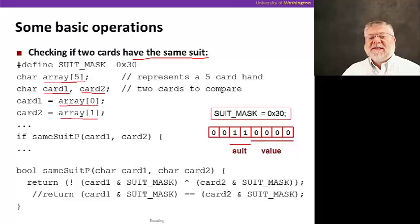Maybe an array to represent a five-card hand. We would take two cards out of the hand and ask if they're the same suit. And this function, same suit p, is implemented here below. It returns a Boolean value, just zero or one, and takes the two cards as arguments.